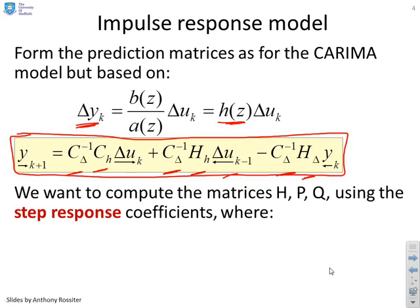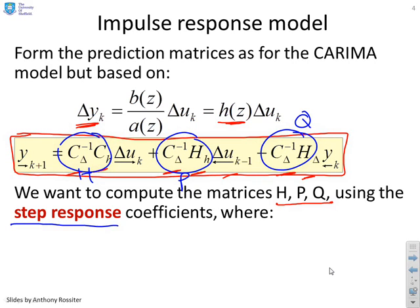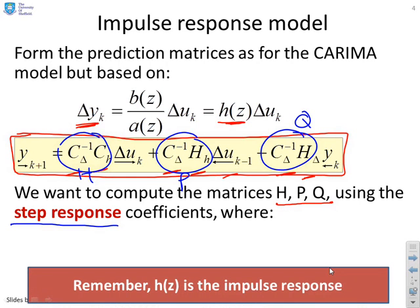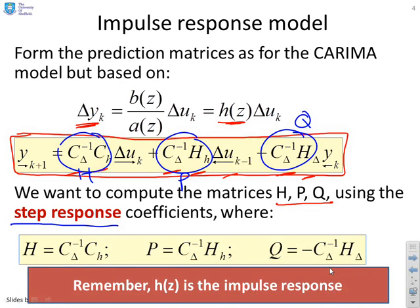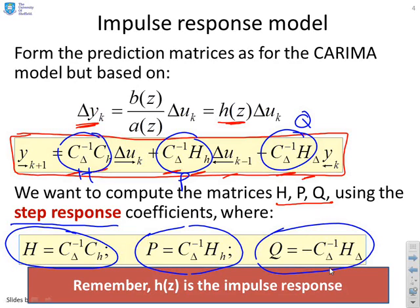But we've got a bit of a problem here. We want to compute the matrices H, P, and Q. In essence, this one is H, this one is P, and this one is Q. We want to compute these matrices based on the step-response coefficients, because that's the information I've been given. But so far, everything we've done has been based on h(z), which is the impulse-response. H equals CΔ⁻¹CH, but CH is the impulse-response. P is CΔ⁻¹HH. Again, H is the impulse-response. This one has just got deltas in it, so it's somewhat easier.